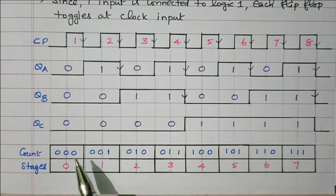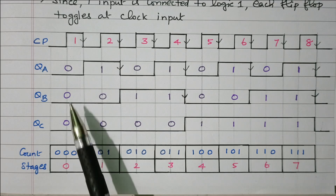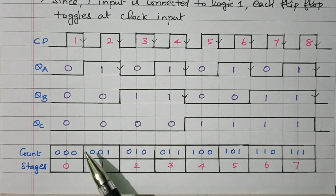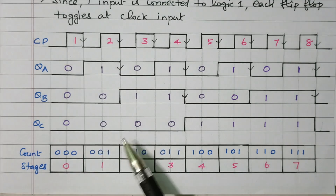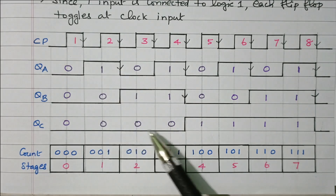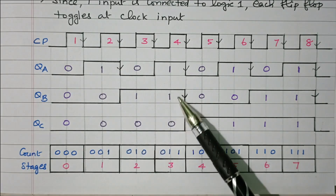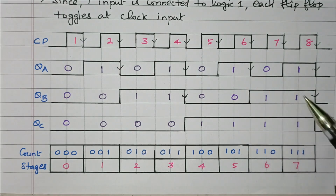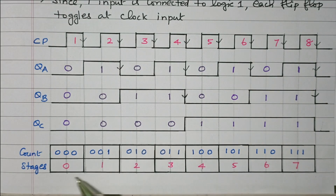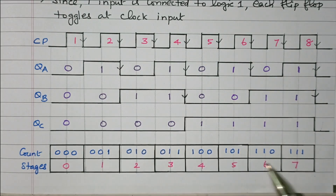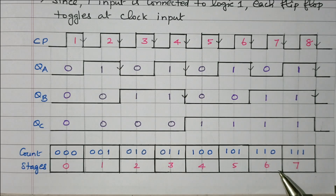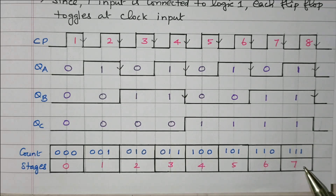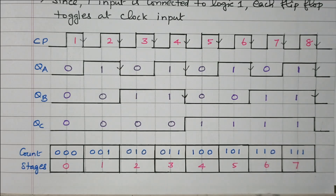QA is the LSB and QC is the MSB. Reading the output: 000, 001, 010, 011, 100, 101, 110, 111 — we get all eight combinations of output for the 3-bit asynchronous counter. After these 8 states it resets to 0 again.